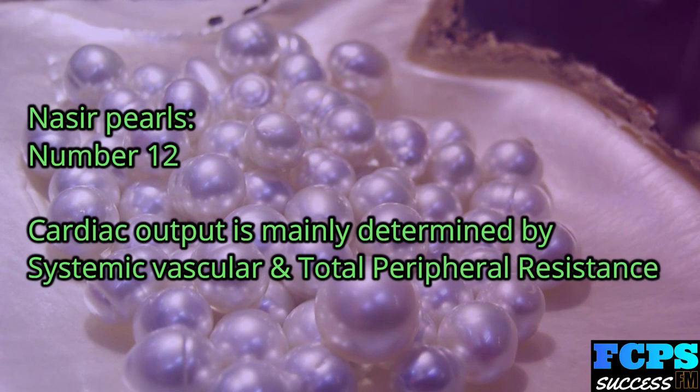Nasir Pearl number 12: Cardiac output is mainly determined by systemic vascular and total peripheral resistance.